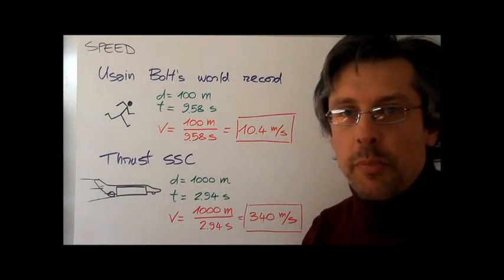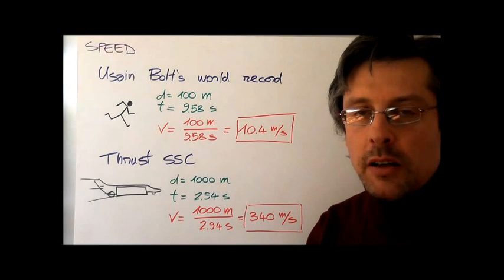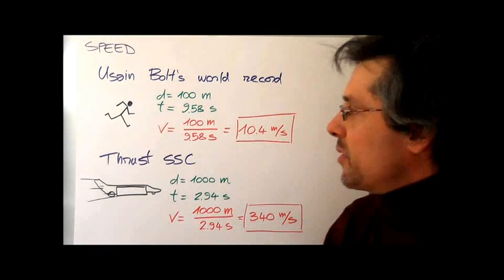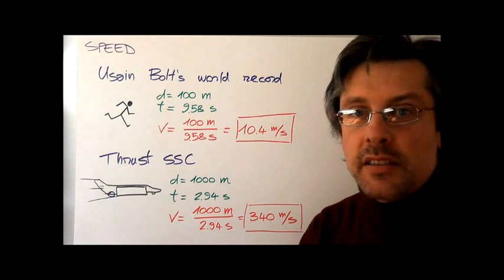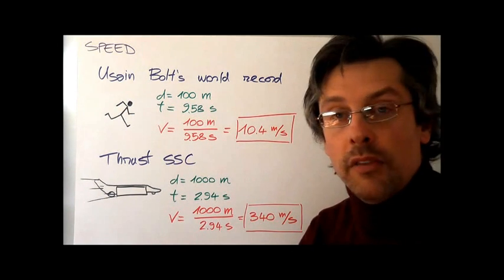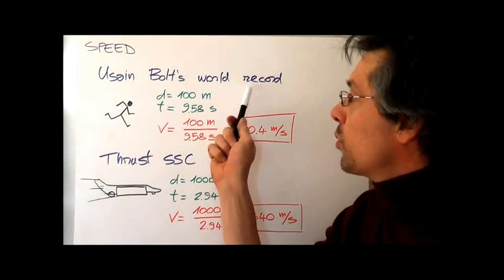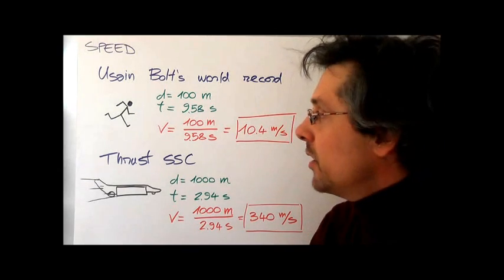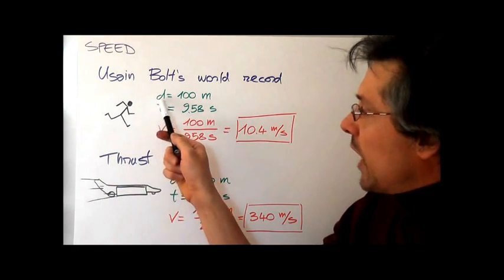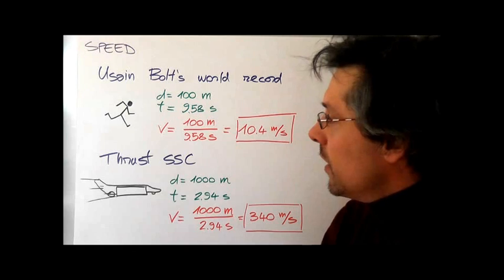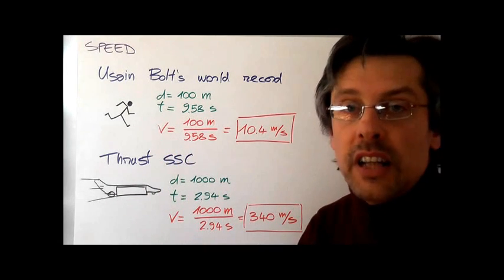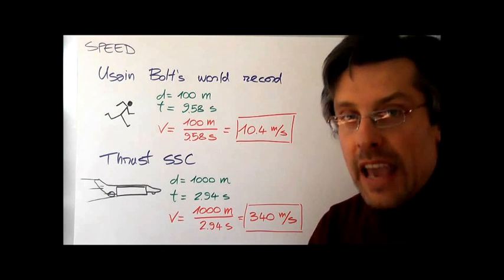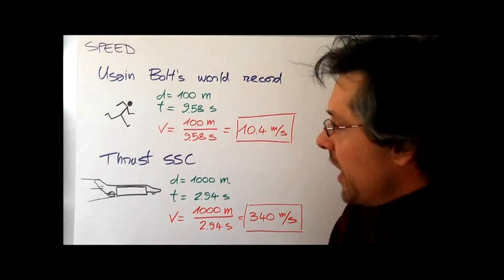So let's see how we can use the previous formula to calculate the average speed of different objects. Let's start with a very famous example: Usain Bolt. He's called the world's fastest man, and he's the world record holder for the 100 meter dash. So when he broke his record, Usain Bolt traveled the distance of 100 meters in an astonishing time of 9.58 seconds.